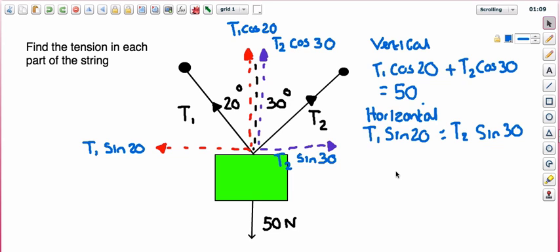So cos of 20 is 0.94. So I'm going to say it's 0.94 T1. Now, if you're doing this properly, you shouldn't round. You should use the full value to the end. But for space, I'm going to have to round. So then I've got cos 30, so T 0.87 T2. So cos 30 is 0.87.